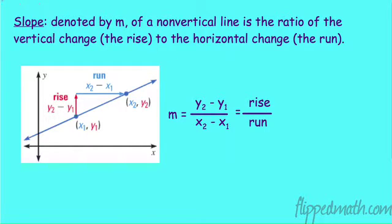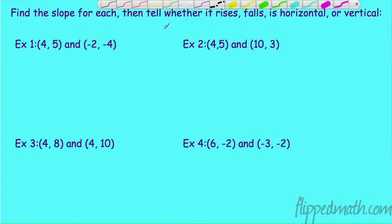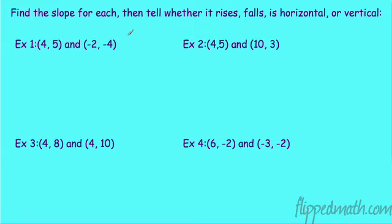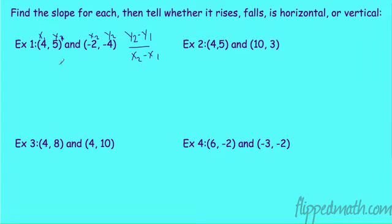Find the slope for each, then tell whether it rises, falls, is horizontal, or is vertical. Without using graphs, you should be able to tell a lot of information from the slope. Let's write the formula: y2 minus y1 over x2 minus x1. The first point gives us x1 and y1, and the second point gives x2 and y2. It really doesn't make a difference — you'll get the same answer.